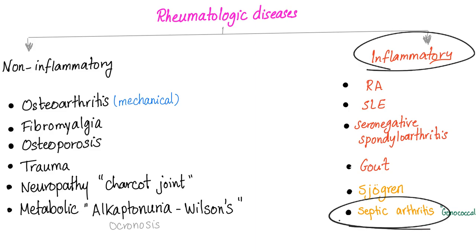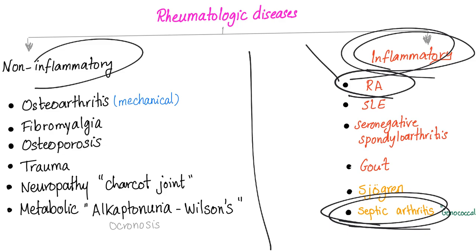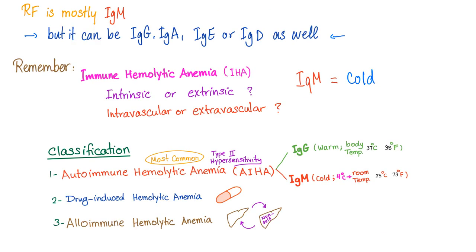Rheumatoid arthritis is an inflammatory arthritis, meaning you will have redness, hotness, swelling, pain, and loss of function. It is also symmetrical, and symptoms improve as the day progresses. Rheumatoid factor is mostly IgM, but it doesn't have to be — it could be IgG, IgA, IgE, or IgD.